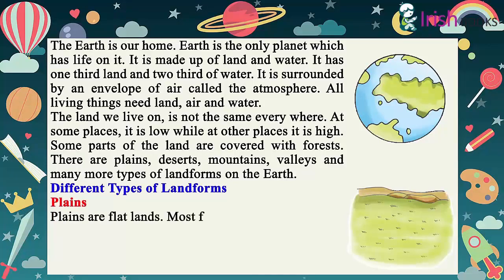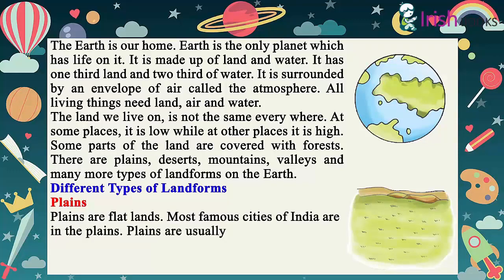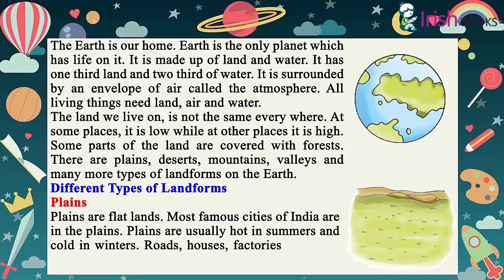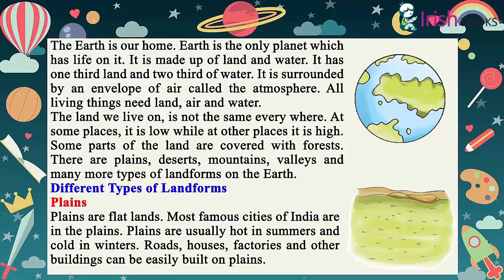Plains are flatlands. Most famous cities of India are in the plains. Plains are usually hot in summers and cold in winters. Roads, houses, factories and other buildings can be easily built on plains.